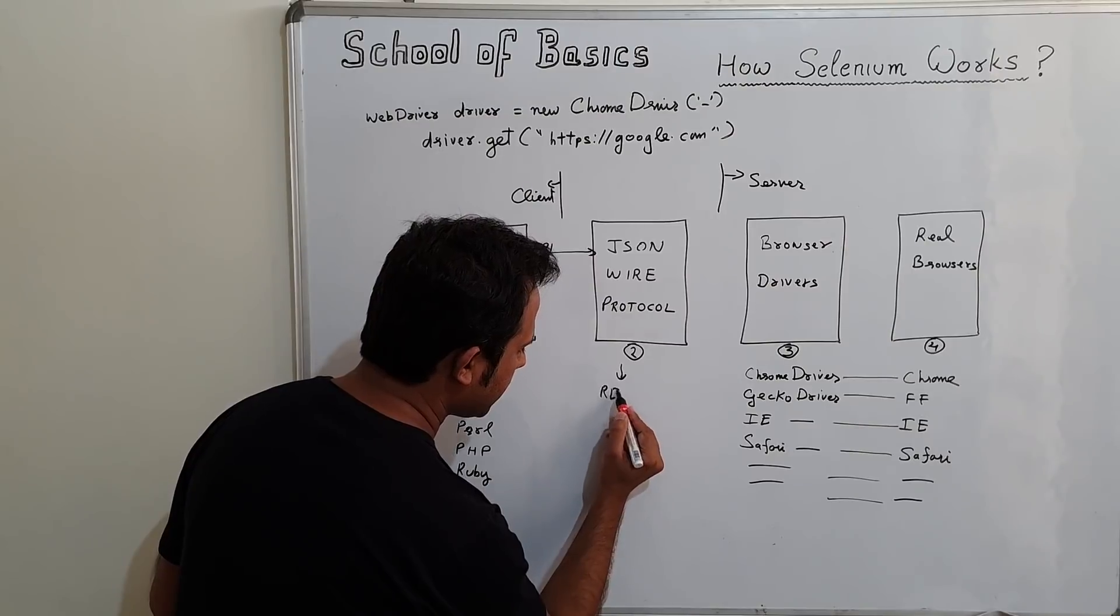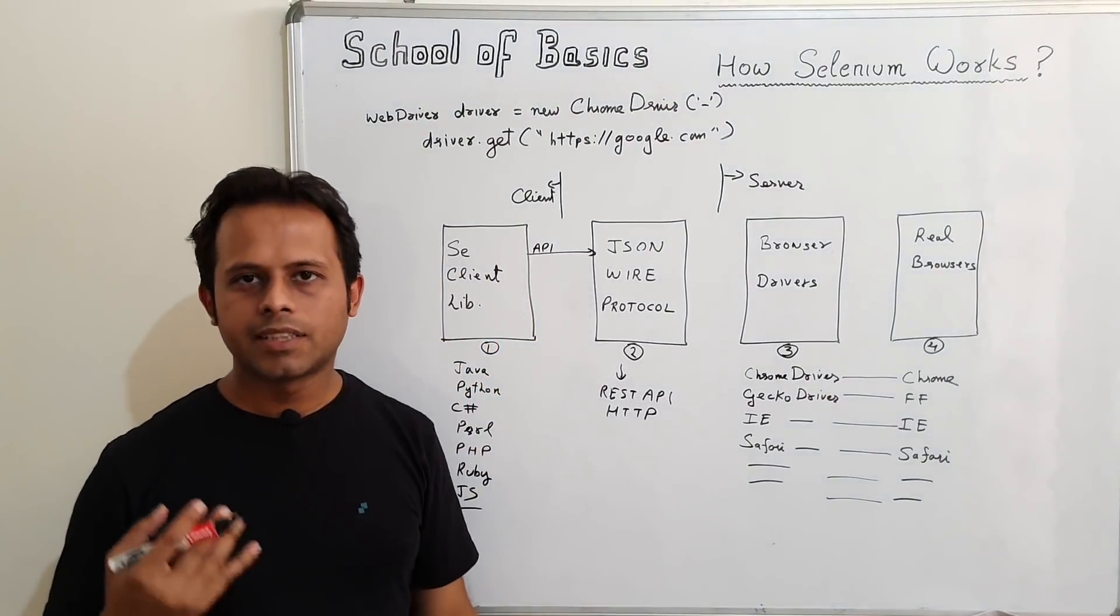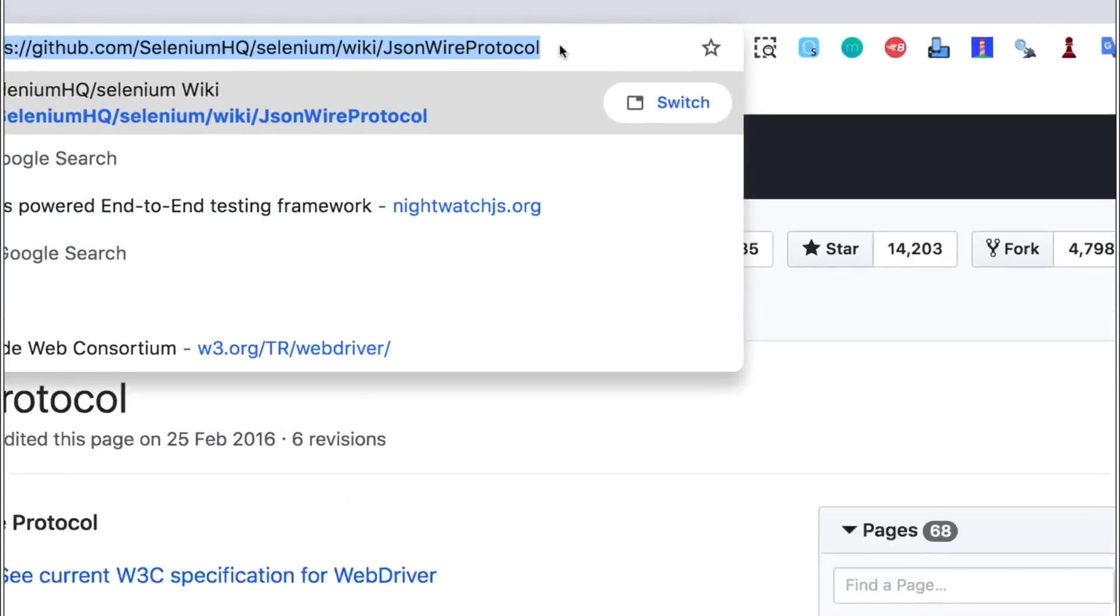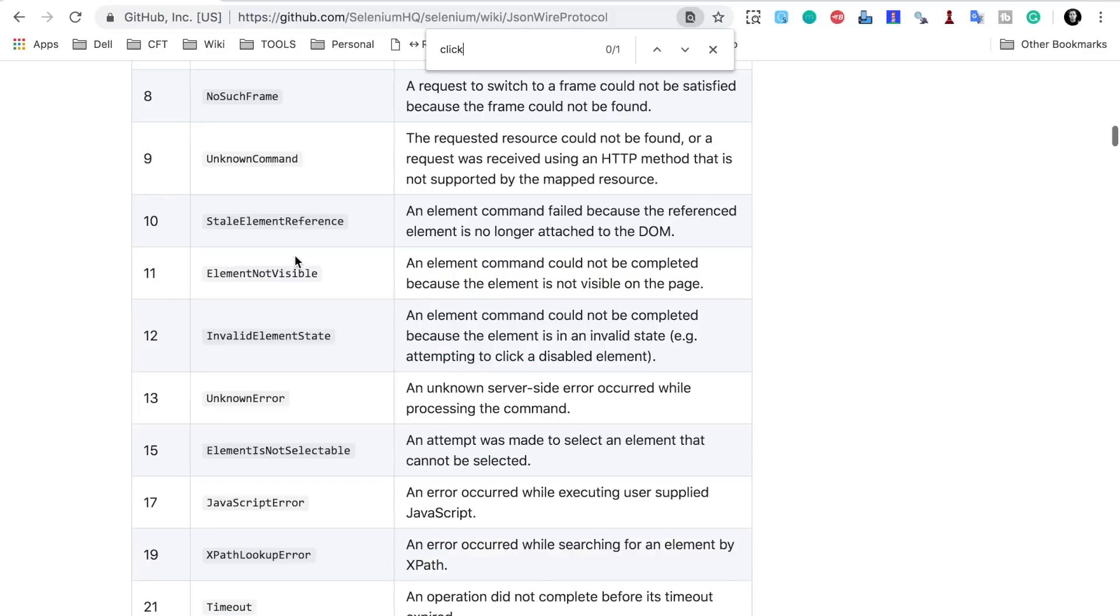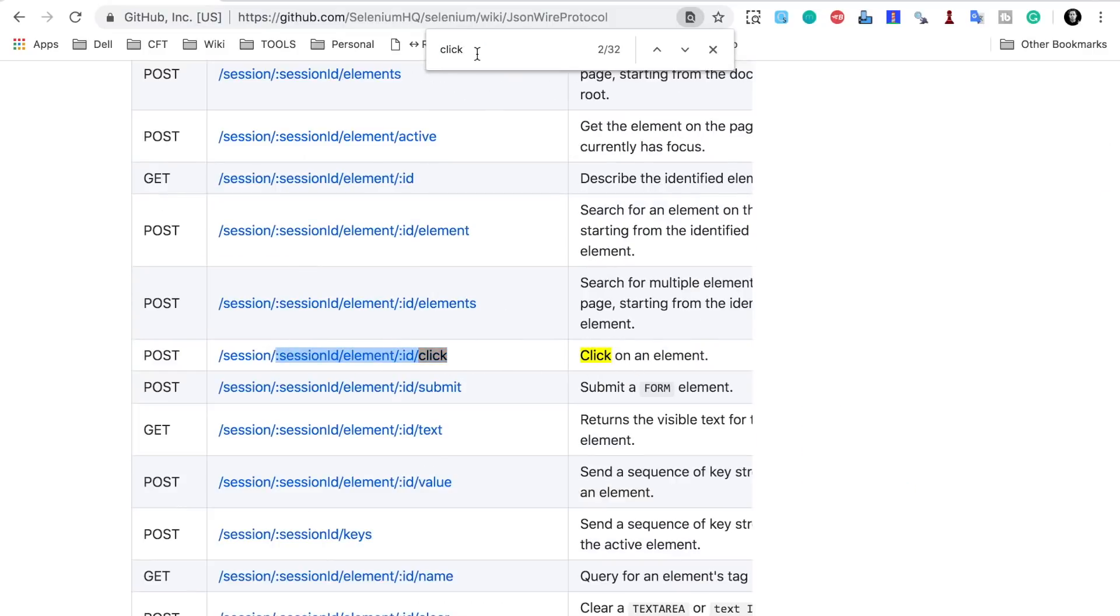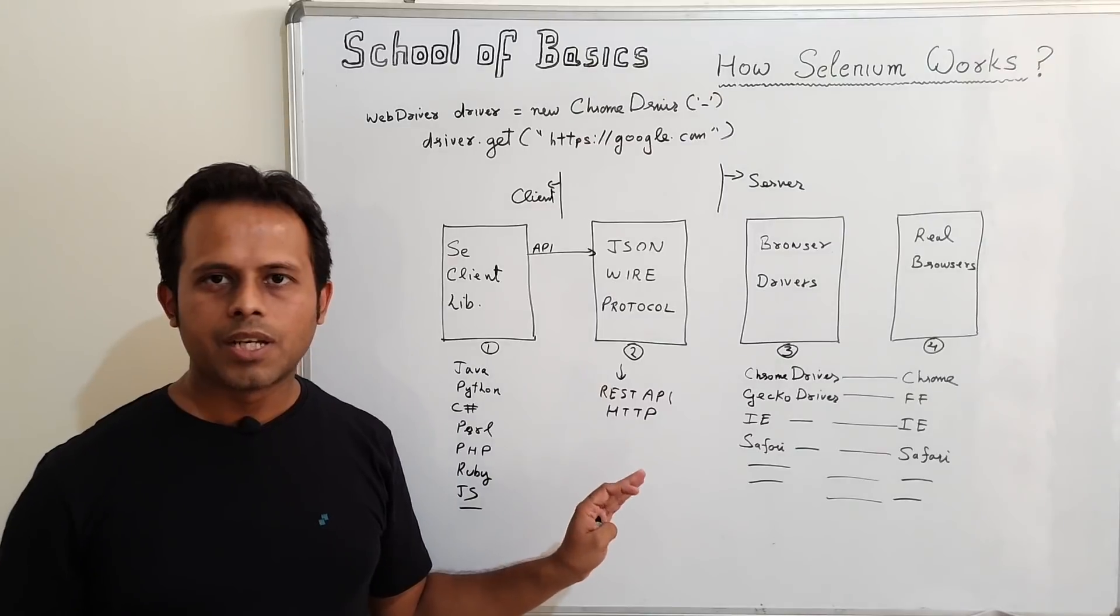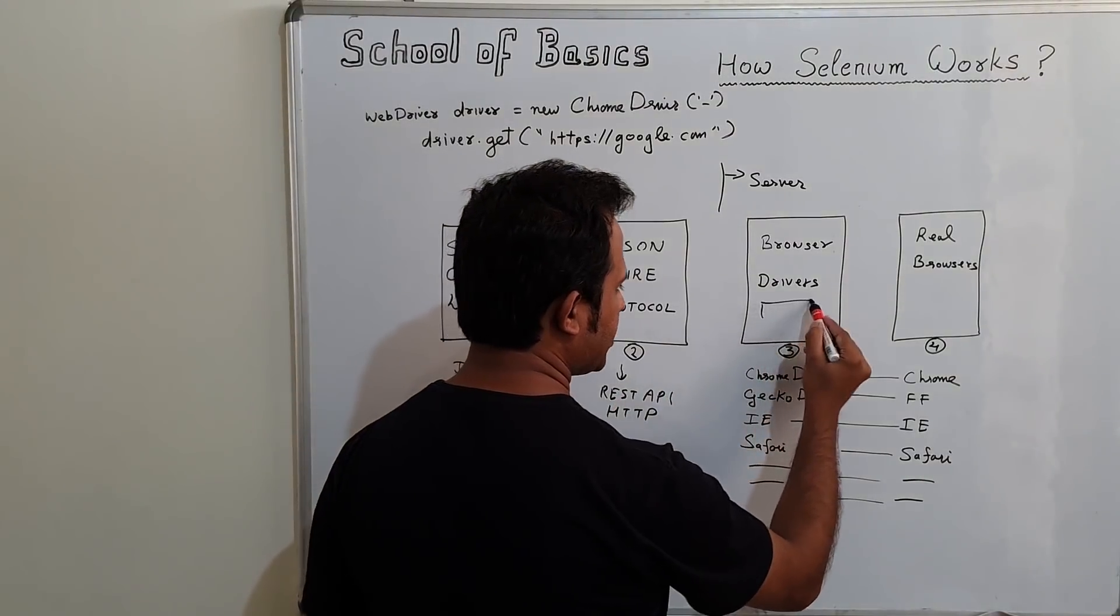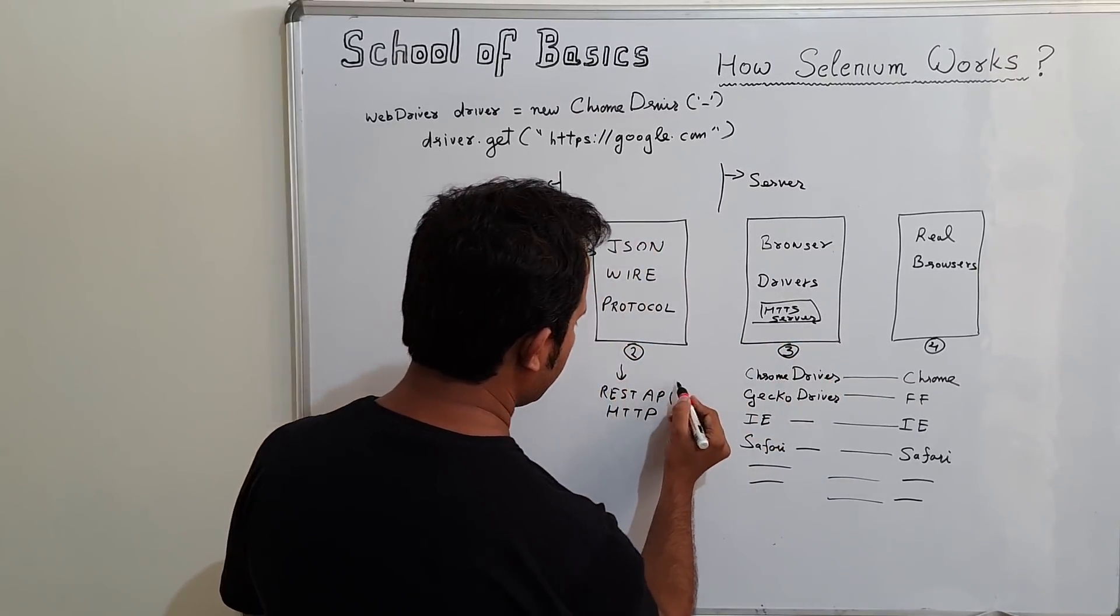JSON wire protocol has REST APIs which work over HTTP. For every command in Selenium, there is a corresponding REST API in JSON wire protocol. If you go to the web page of JSON wire protocol Selenium, you will find that for every possible command that you can give in Selenium, there is an API. For example, for click, you will find an API for navigate, for wait, every possible function or command. This API is a REST API that has JSON format and this goes as a URL to the browser drivers. Every browser driver has its own HTTP server.